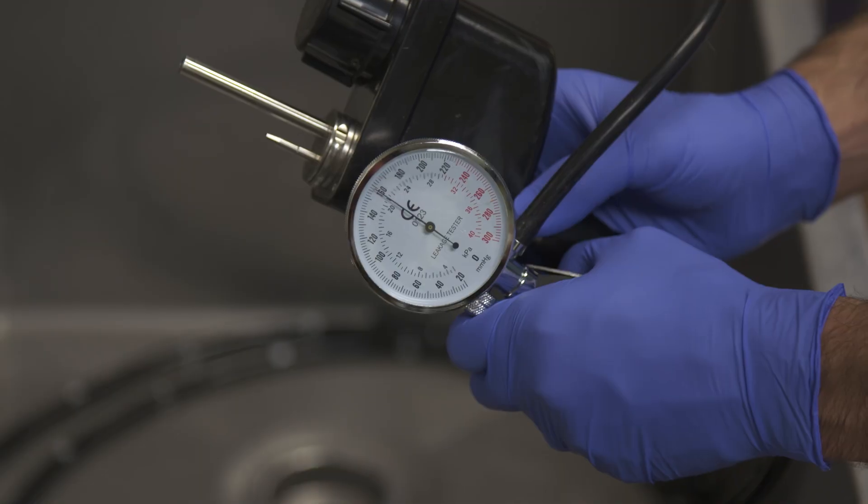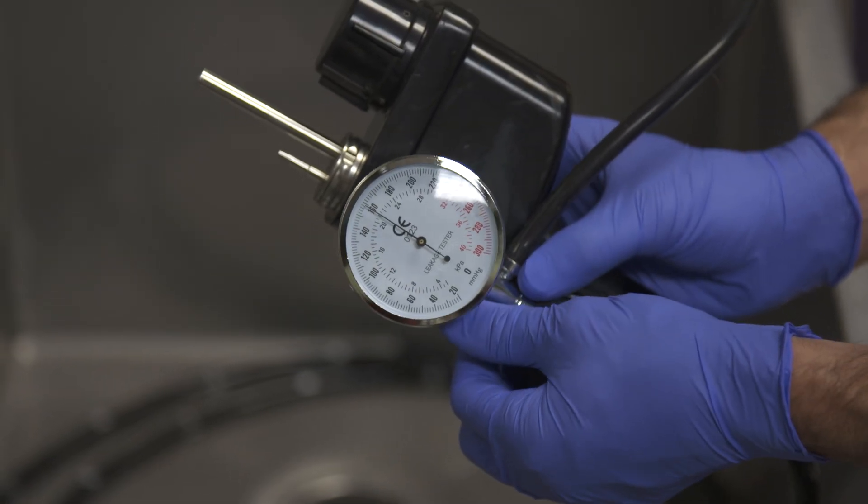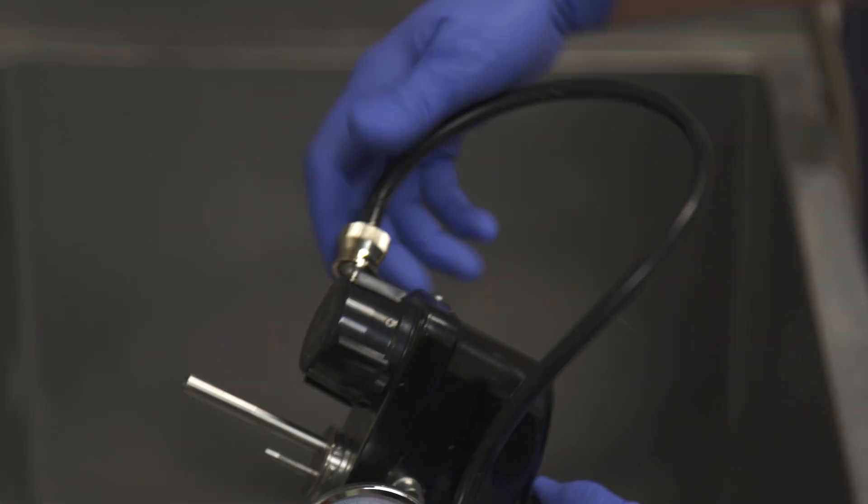If the pressure does not drop more than 10 millimeters of mercury, the instrument is watertight and may be immersed for cleaning. Always depressurize the system before disconnecting and removing the leak tester.